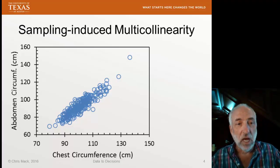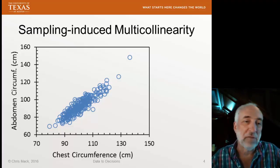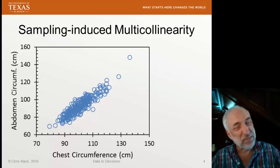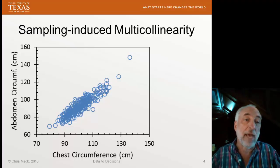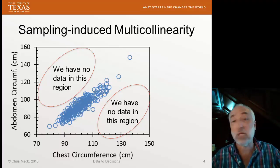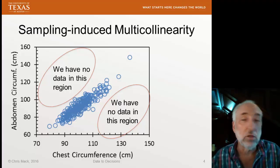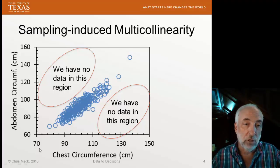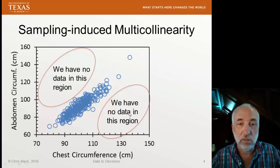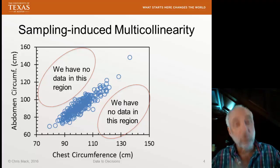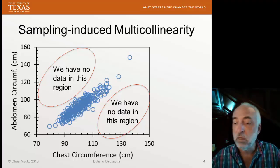Here's an example. I've got this data — we've looked at it several times — from the Body Fat Experimental Data Set. I have a correlation between abdomen circumference and chest circumference. This makes perfect sense when you think about it: somebody who's larger is usually larger both in the chest and the abdomen. But could it be that we don't have data in these other regions simply because none of our subjects happened to fall there? Maybe there are people with small chest and larger abdomen, or vice versa — body shapes that would help us break the multicollinearity caused by our sampling.